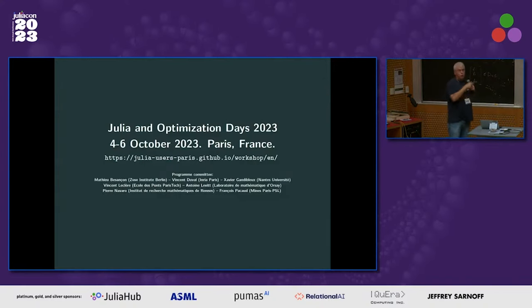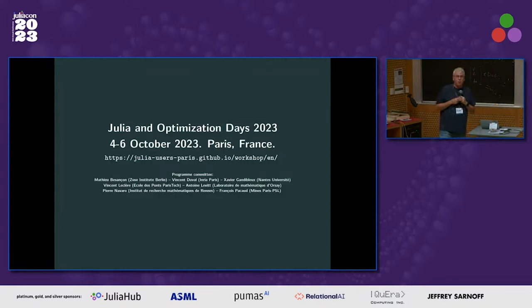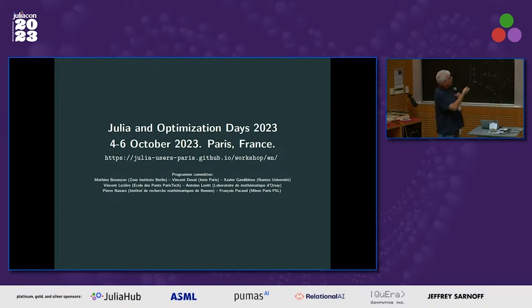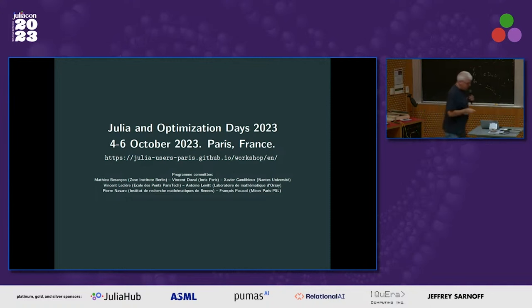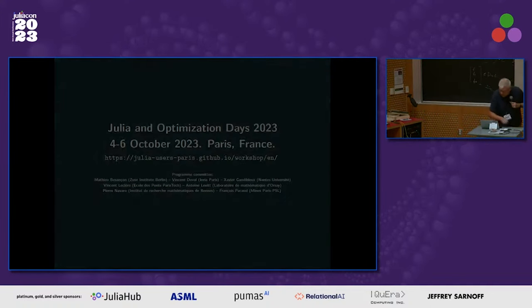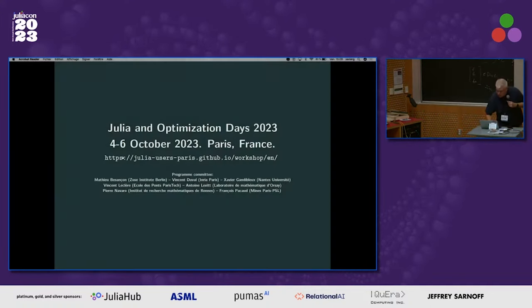Just to conclude, I would like to make an announcement. We are organizing in October in Paris a Julia and JuMP optimization day over three days. You can see the program committee here, and the event is located in downtown Paris.